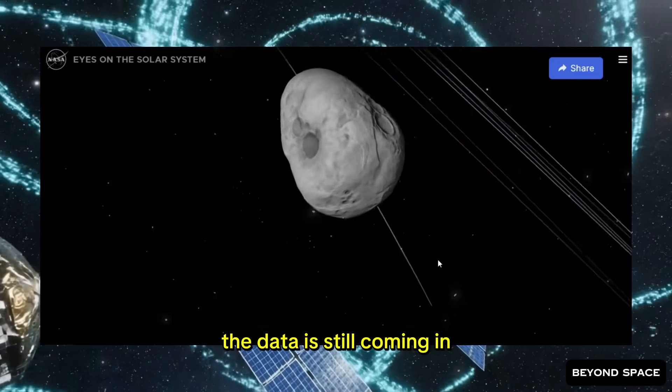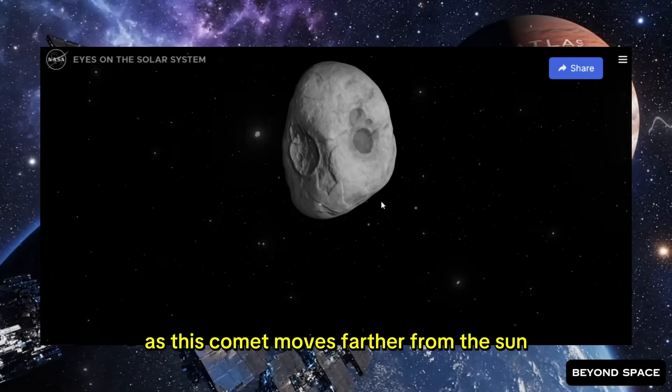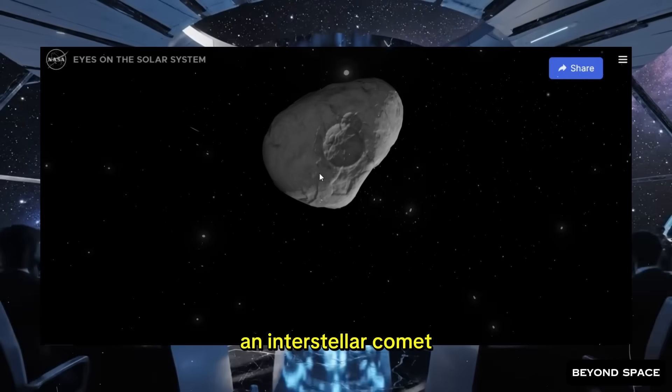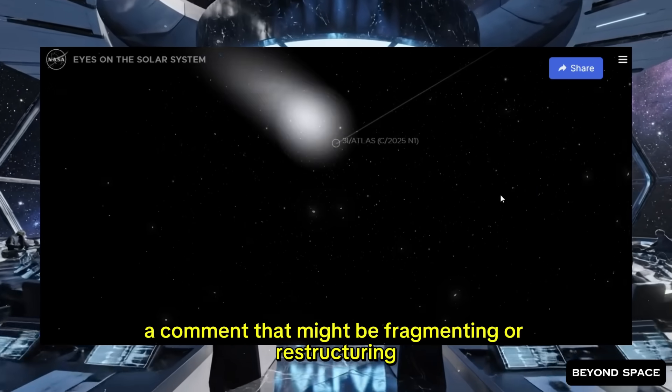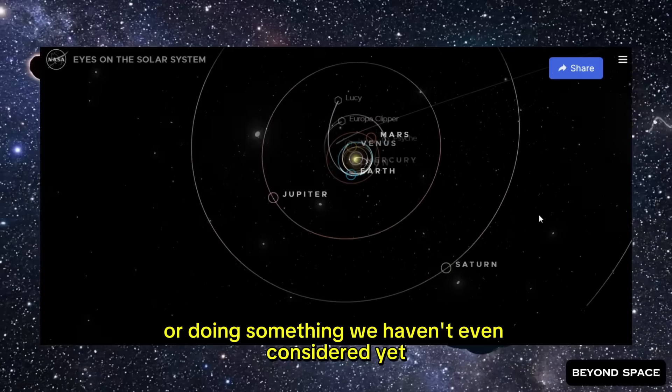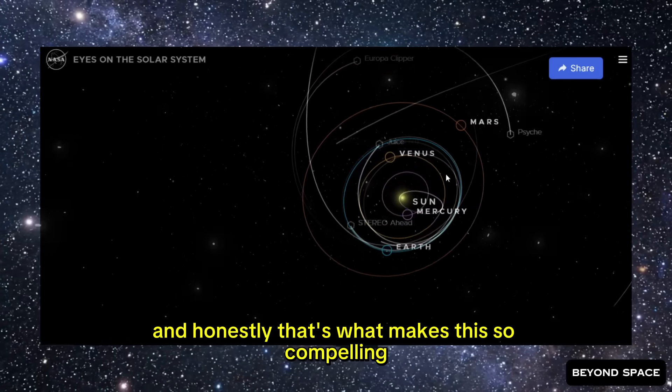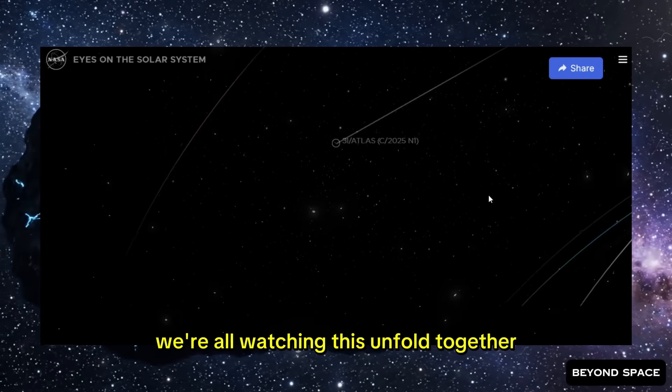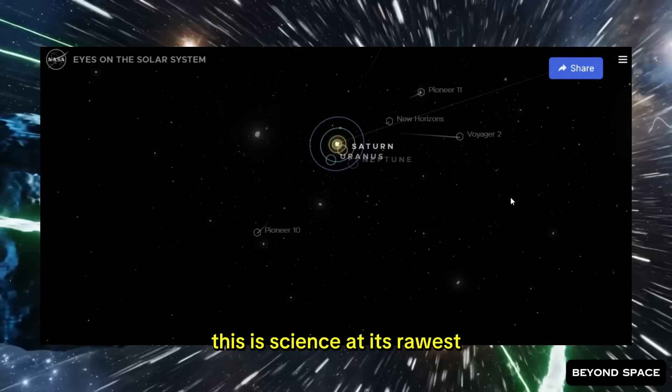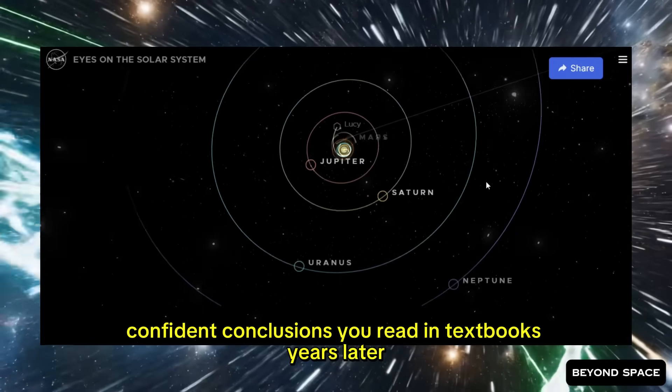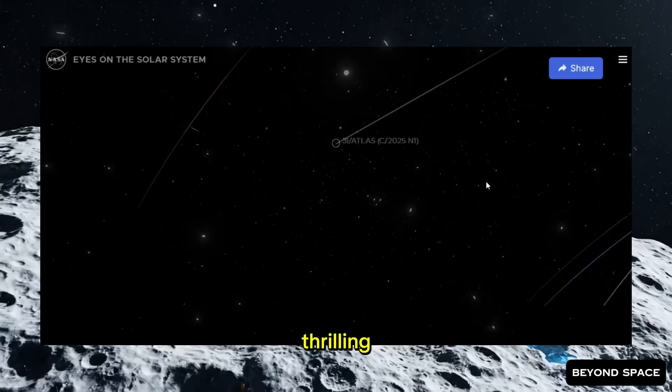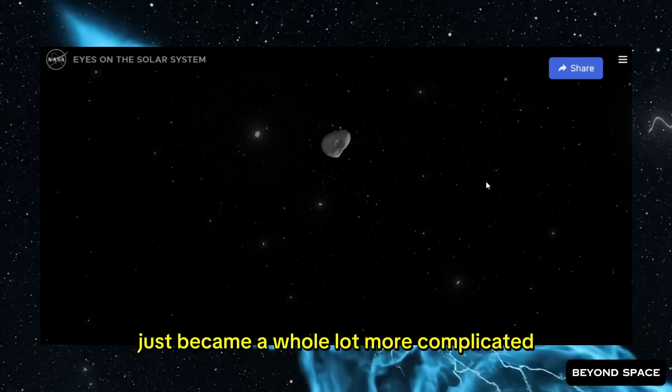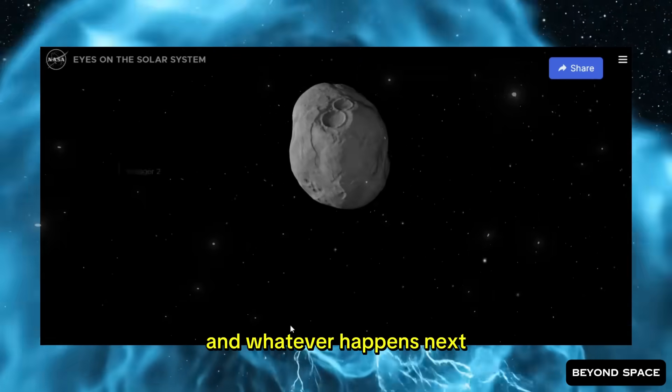The observations aren't stopping. The data is still coming in. And every night, as this comet moves farther from the sun and deeper into space, we're going to learn more. That's what NASA discovered today. An interstellar comet that's no longer behaving like the same object. A comet that might be fragmenting, or restructuring, or doing something we haven't even considered yet. And honestly, that's what makes this so compelling. We don't have all the answers. The scientists on the cutting edge of this don't have all the answers. We're all watching this unfold together, trying to piece together what's happening in real time. This is science at its rawest. Not the polished, confident conclusions you read in textbooks years later, but the messy, uncertain, thrilling process of discovery as it's actually happening. The moment when you realize the thing you thought you understood just became a whole lot more complicated. That's where we are with 3i Atlas. And whatever happens next, it's going to be fascinating.